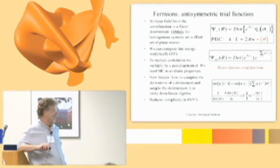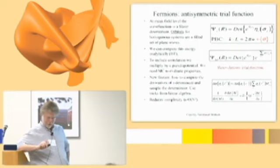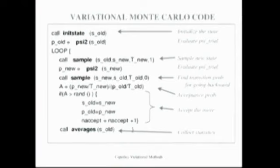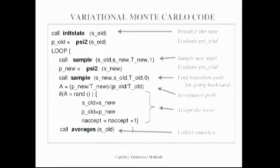One of the issues we're confronting is how to calculate determinants quicker when doing this for millions of electrons. Here's a variational Monte Carlo code. It looks very much like the Metropolis code — I just changed some symbols. You initialize the state, put your N electrons in the box. Now we have the wave function instead of the energy. We calculate the energy. You calculate the square of the wave function for the new point and the old point.